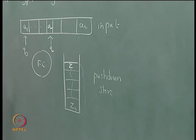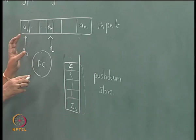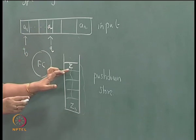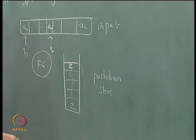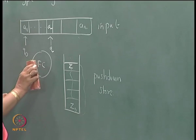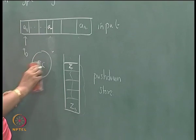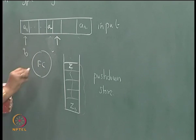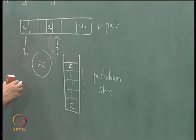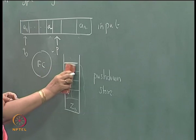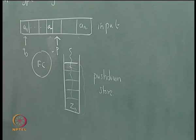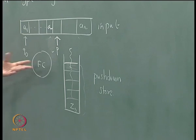So the mapping will depend upon the state, the symbol read, and the topmost stack symbol or the pushdown symbol. In the next instance, the input pointer can move, it can go to a different state, and instead of Z you can write something on the stack — a string on the stack. You can even remove Z.